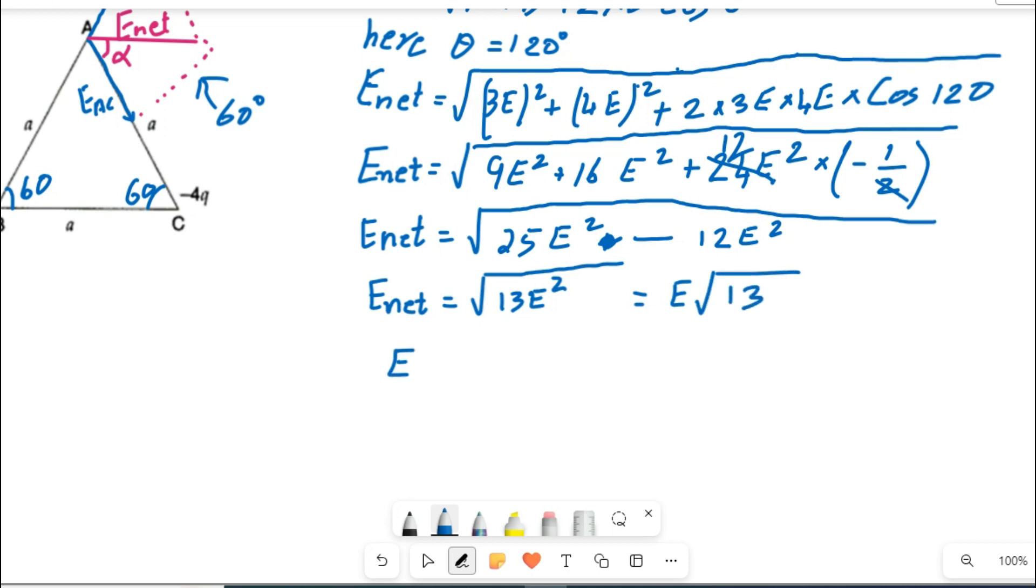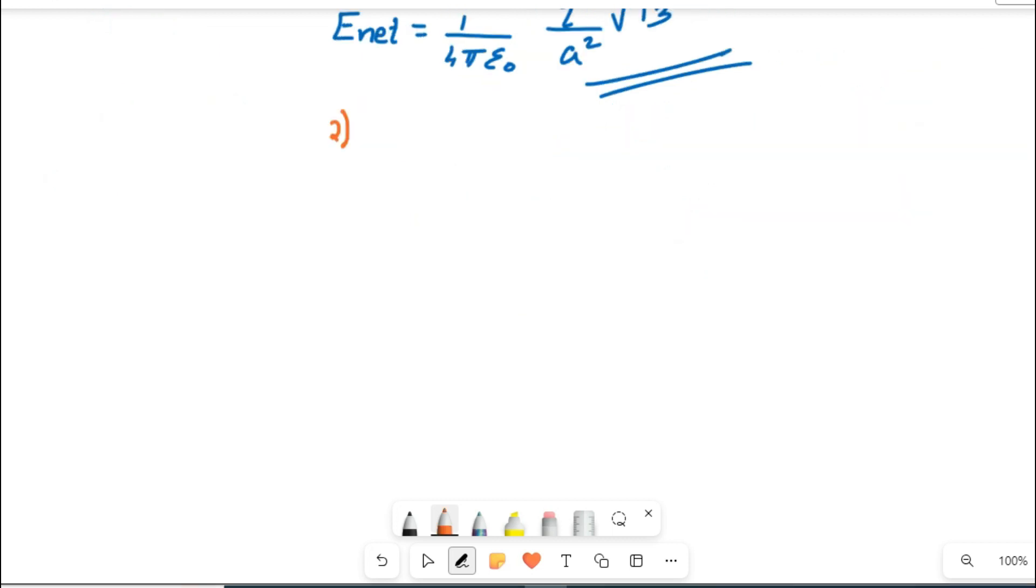Now you can apply the value of E. So it equals 1 by 4πε₀ Q by A square times square root 13. So the first part we answered now. Usually a 3 mark question, so 1 and a half marks ready.